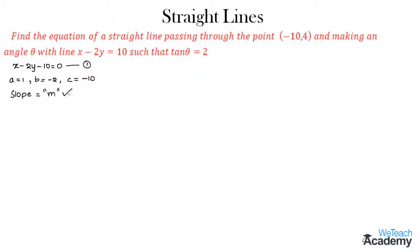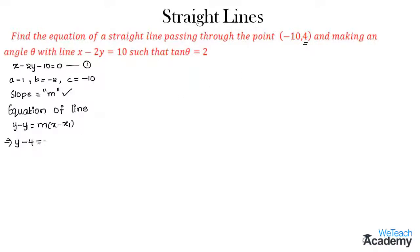Now let us assume the slope of the required straight line as m. Using this slope and the given point, we can find the equation of a line using slope-point form: y minus y1 equals m into (x minus x1). Substituting, y minus 4 equals m into (x minus (minus 10)), giving mx minus y plus 4 plus 10m equals 0.